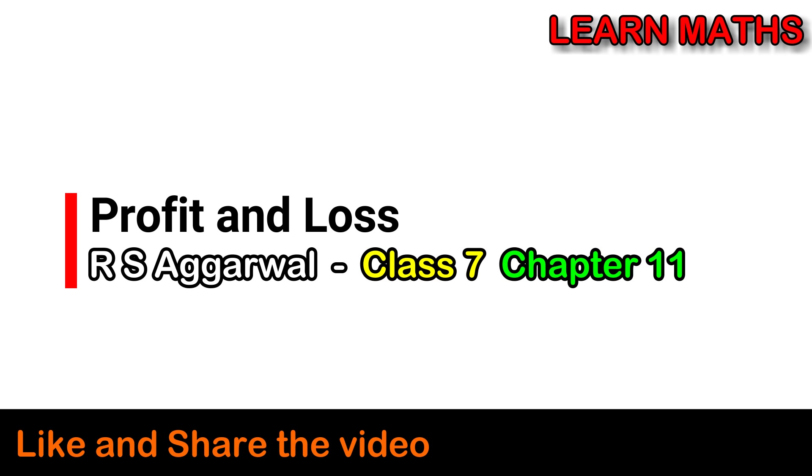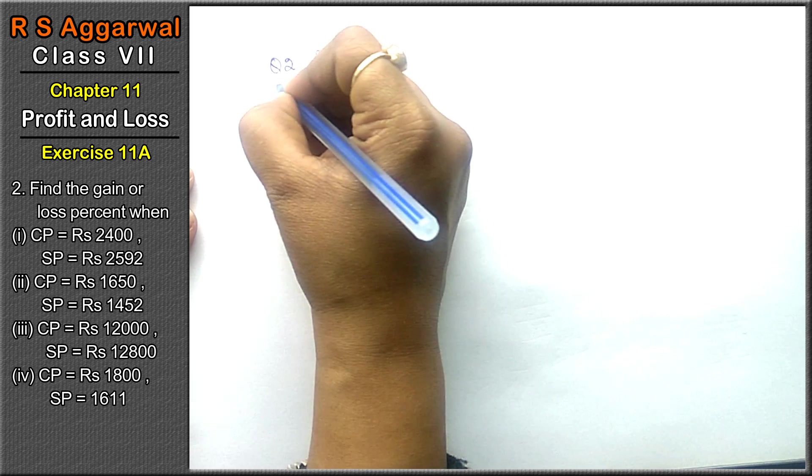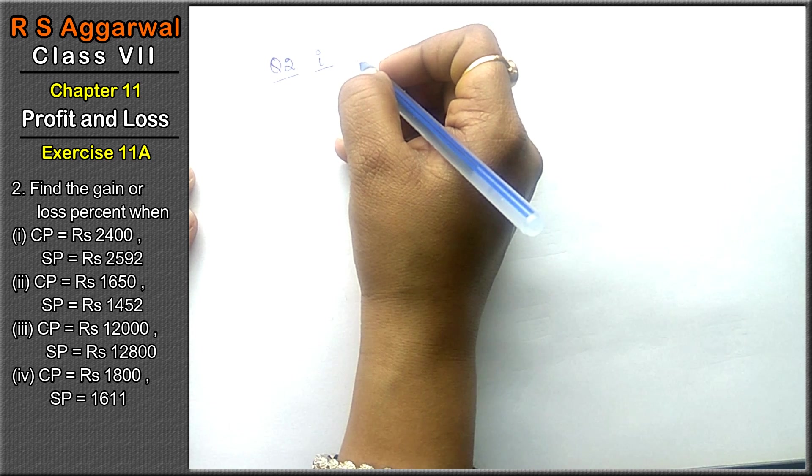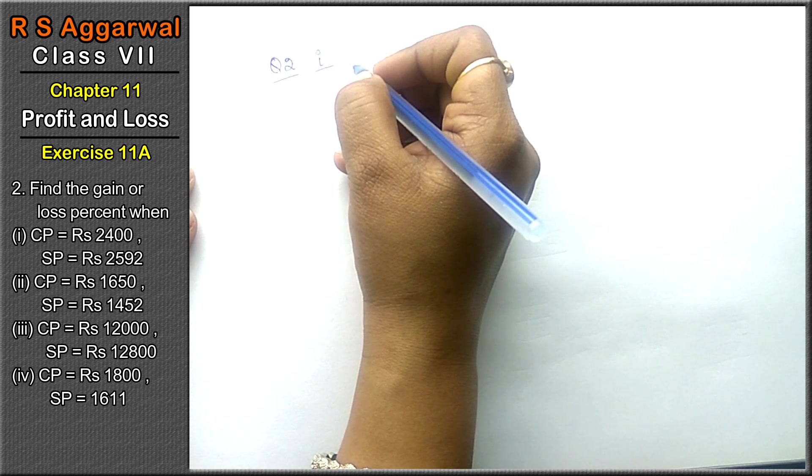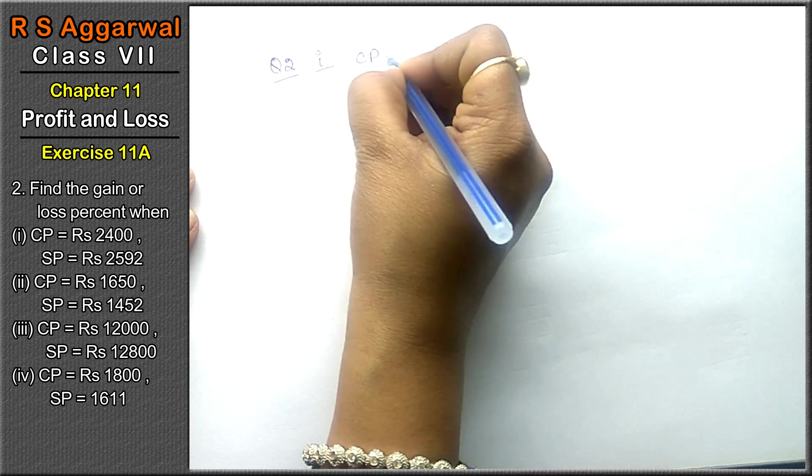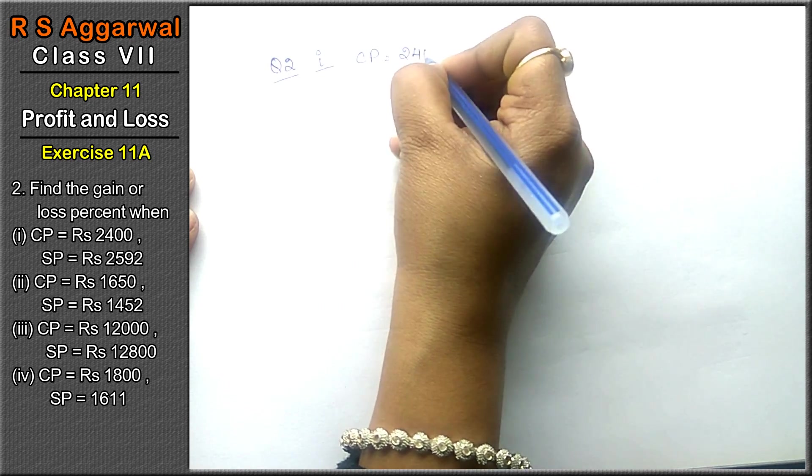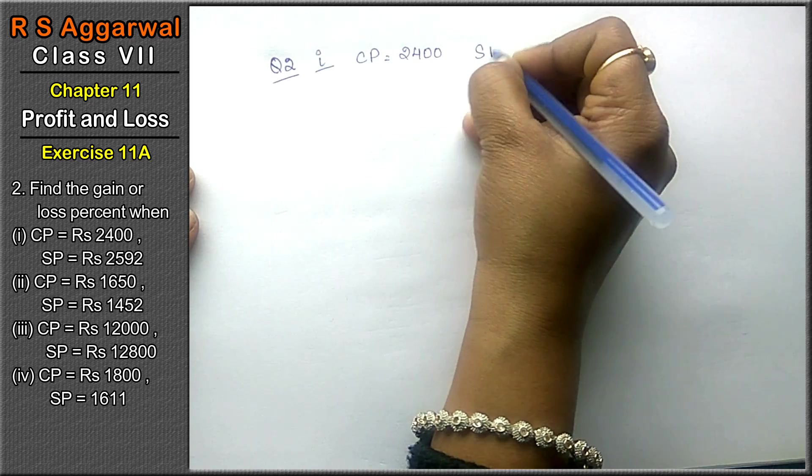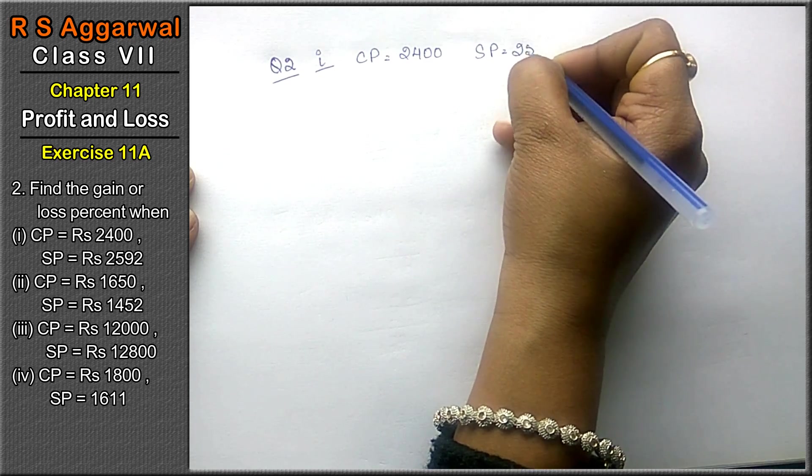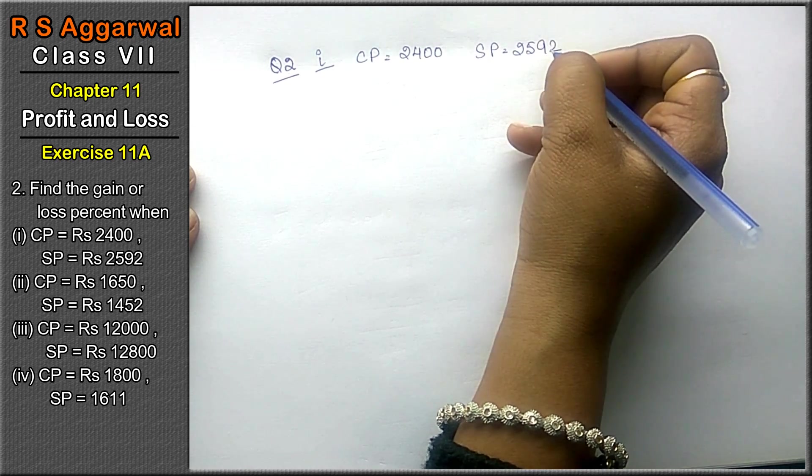Let's do question number 2, first part. Find the gain or loss percent when CP equals to 2400 rupees and SP is given 2592. We have to find out the loss or gain percent.